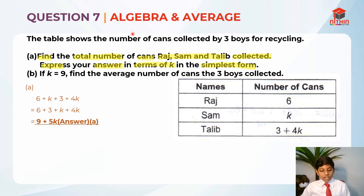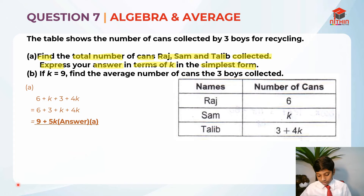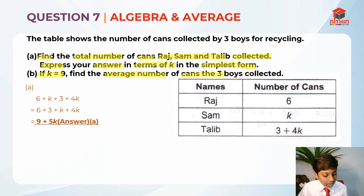So this is Part B. Let's read the question: if K equals 9, find the average number of cans the 3 boys collected. This is where the average comes in.